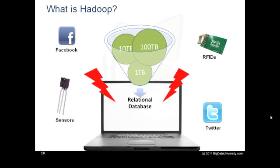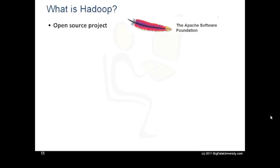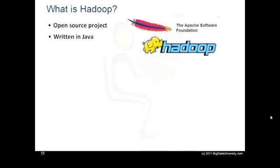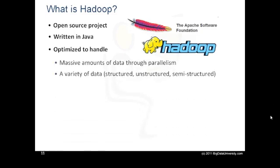What should you do? Hadoop may be the answer. Hadoop is an open source project of the Apache Foundation. It is a framework written in Java, originally developed by Doug Cutting, who named it after his son's toy elephant. Hadoop uses Google's MapReduce and Google File System technologies as its foundation. It is optimized to handle massive quantities of data which could be structured, unstructured or semi-structured, using commodity hardware — that is, relatively inexpensive computers. This massive parallel processing is done with great performance.